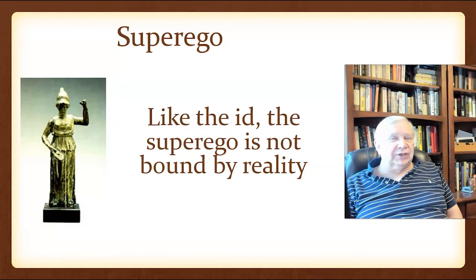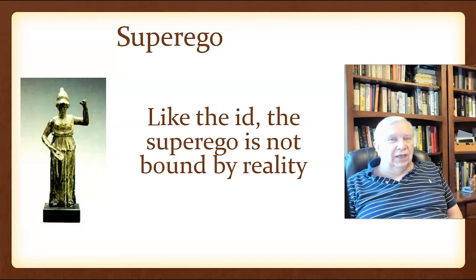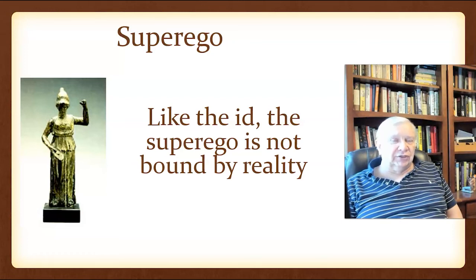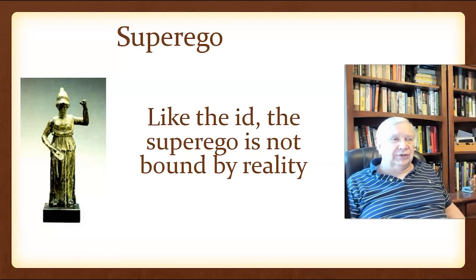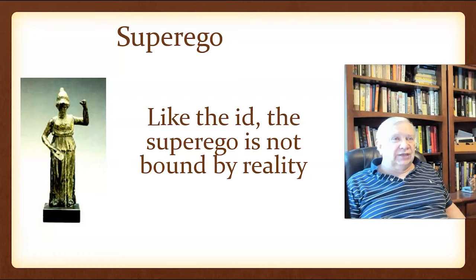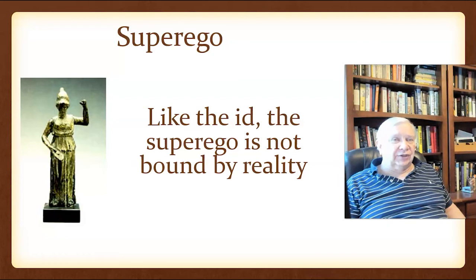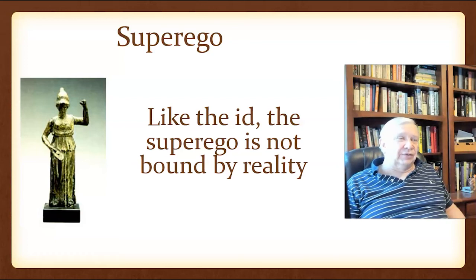Now the superego and the id, unlike the ego, are not bound by reality. You see this all the time — individuals who become very rule-bound even though the rule system might have changed. If you've ever seen The Big Bang Theory — one of my favorite comedies — Sheldon Cooper, one of the lead characters, is extremely rule-bound. He feels a lot of anxiety if he doesn't follow the rules as he perceives them, which includes everything from what to eat on certain days of the week, what activities to do, down to a roommate agreement and a bathroom agreement as well. So the superego is a very interesting structure — it gives us right and wrong.